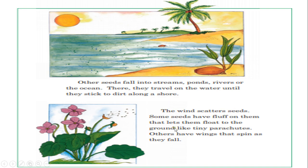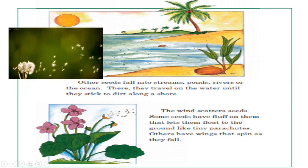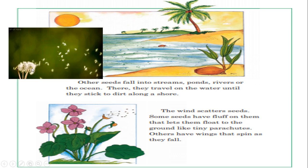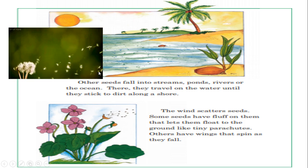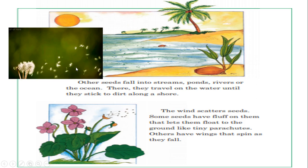The wind scatters seeds — scatter meaning to blow them away and distribute them. Some seeds have fluff on them, like a dandelion. The fluff lets them float to the ground like tiny parachutes. Inside the fluff we have seeds that were grown by the same flower. The wind blows them away and the seeds are scattered everywhere to grow other plants. Thanks to the fluff, seeds are able to travel to far away places.